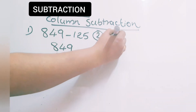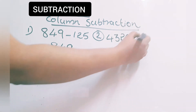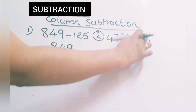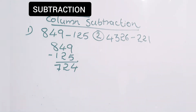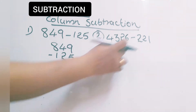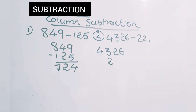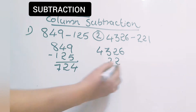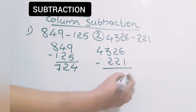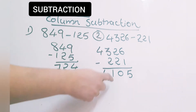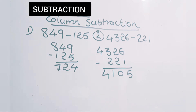Now let's see a 4-digit number and a 3-digit number together — how it is to be done: 4,326 minus 221. Since 221 starts from the hundreds place, you also start from just below the hundreds place. Write 221 aligned below the hundreds digit of 4,326. This is also without regrouping. 6 minus 1 is 5. 2 minus 2 is 0. 3 minus 2 is 1. 4 is 4 only. So the difference is 4,105. This is column subtraction without regrouping.